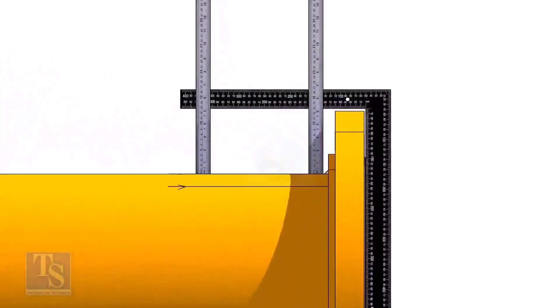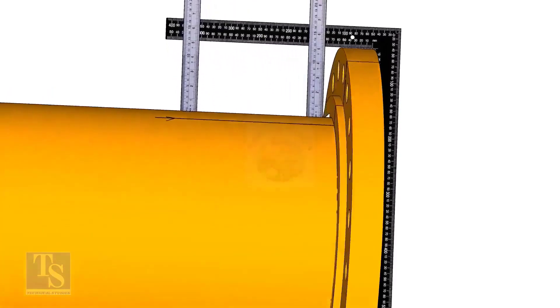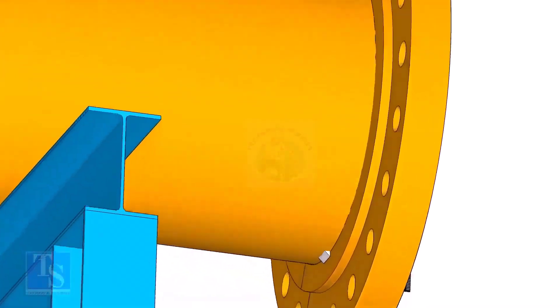Tack weld on the top of the pipe with the flange and check the squareness. If correct, tack weld at the bottom side also.